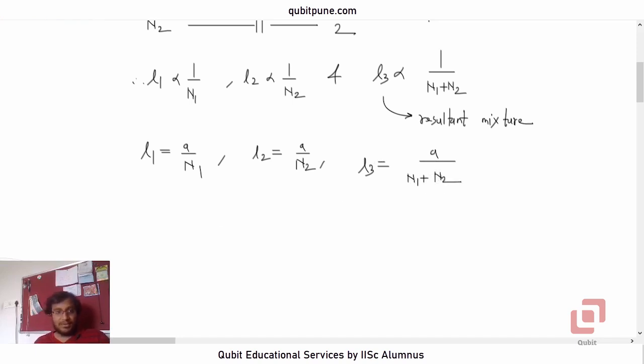Now let us substitute for N1 and N2 here. So what will L3 be? L3 will be a divided by a by L1 plus a by L2 from the second equation.